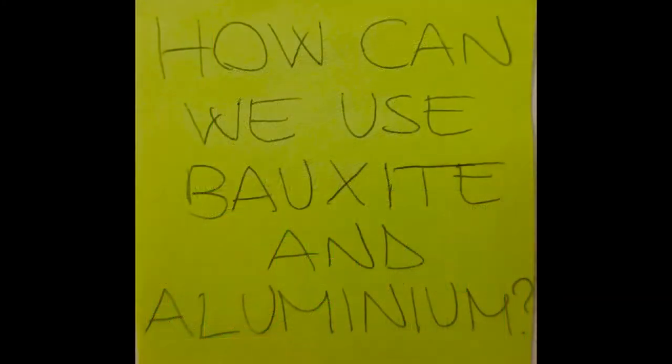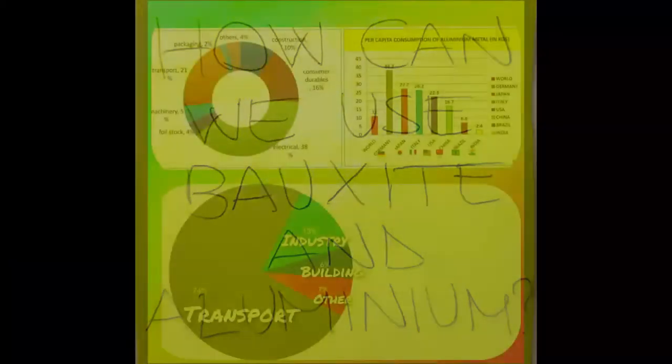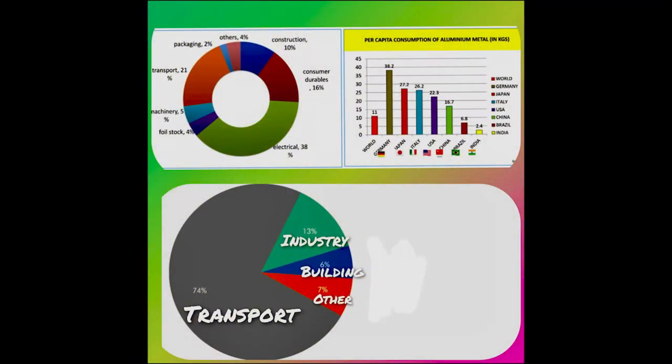As mentioned before, bauxite is used to produce aluminium. Aluminium is the third most abundant element present in the Earth's crust, another factor favoring the use of aluminium in many products.